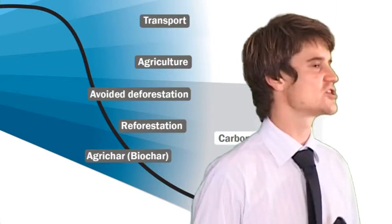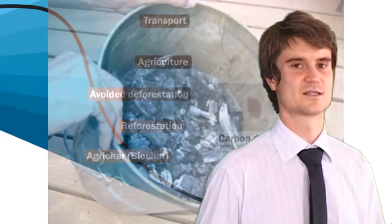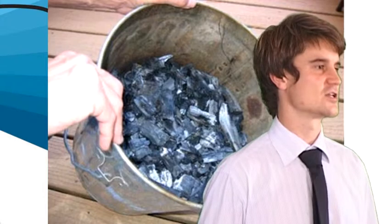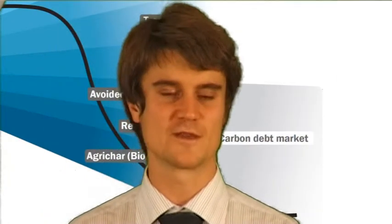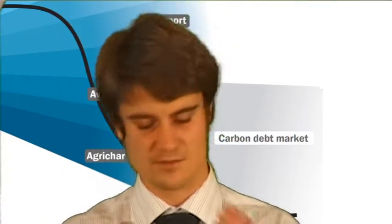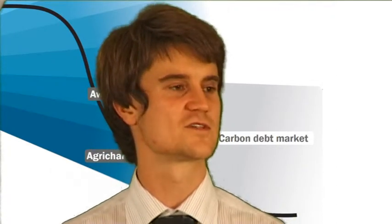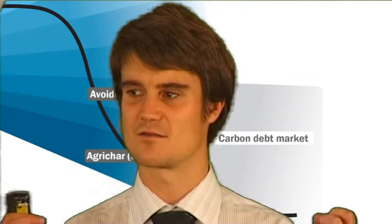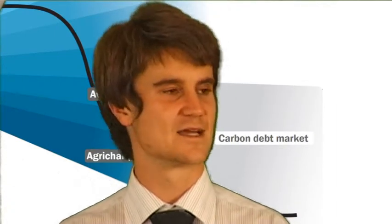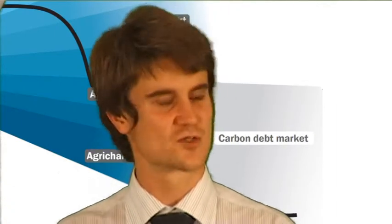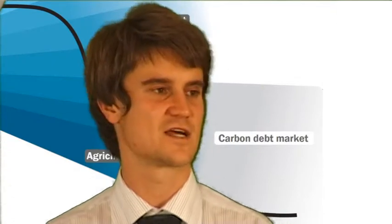Finally we've got agrichar. Agrichar is a method of actually grabbing our crop wastes and our algae that we can grow at sewage farms and then cooking that up in the absence of oxygen and putting that char, which has got no energy value, into soils. It allows water retention and increases crop yields, but also that carbon is locked down there for thousands of years. That's been demonstrated by people in the Amazon.